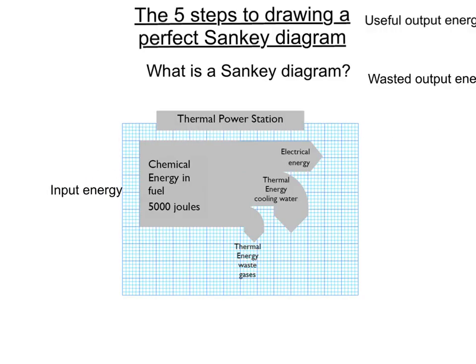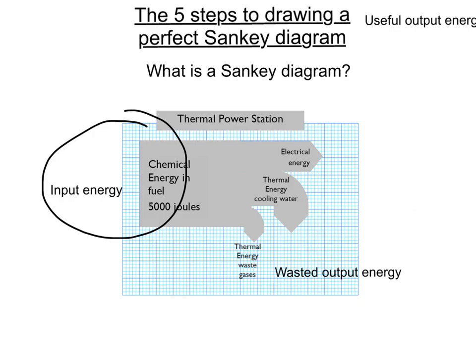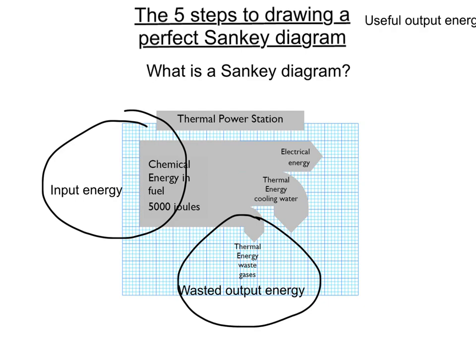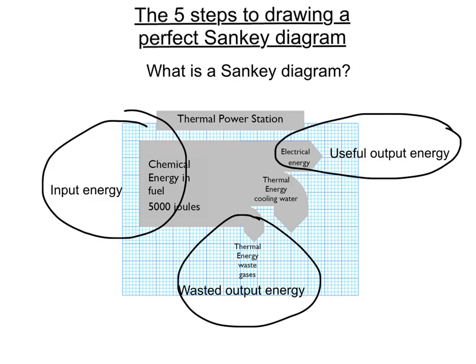That tells you how much energy is being put into the energy transfer. The second part is the wasted energy output—the arrows pointing downwards on our Sankey diagram. And thirdly is the useful energy outputs, which are the arrows pointing to the right on our Sankey diagram.